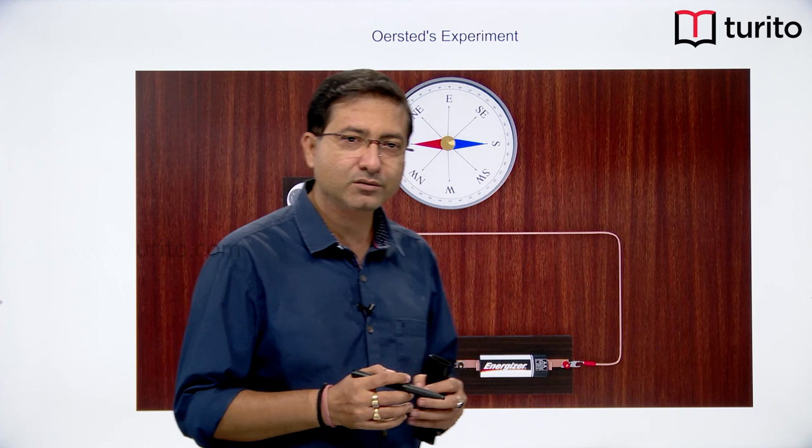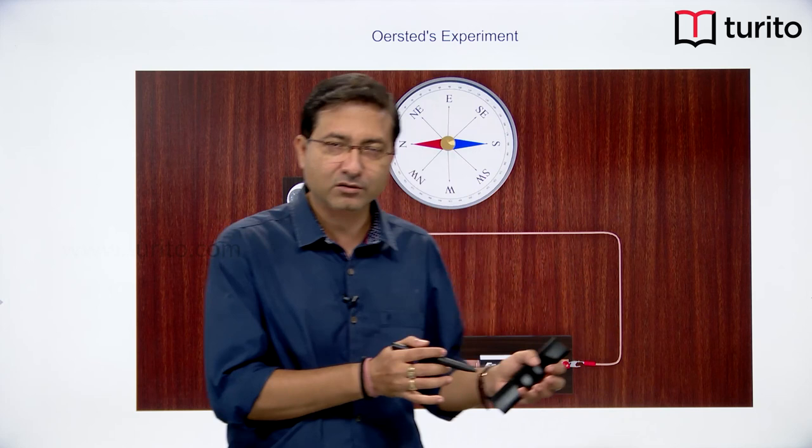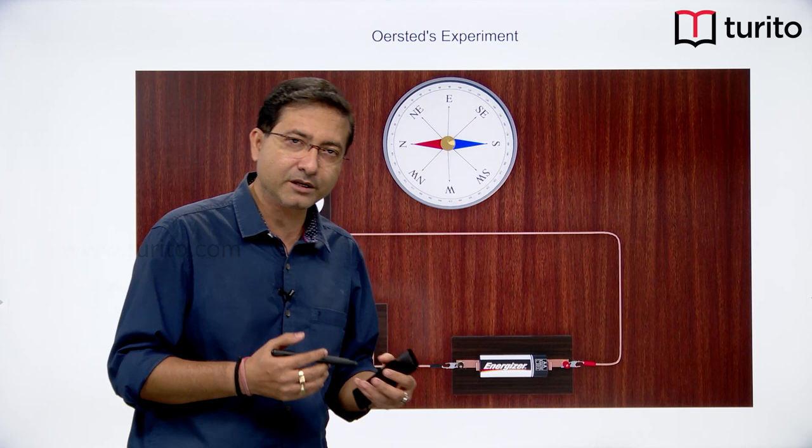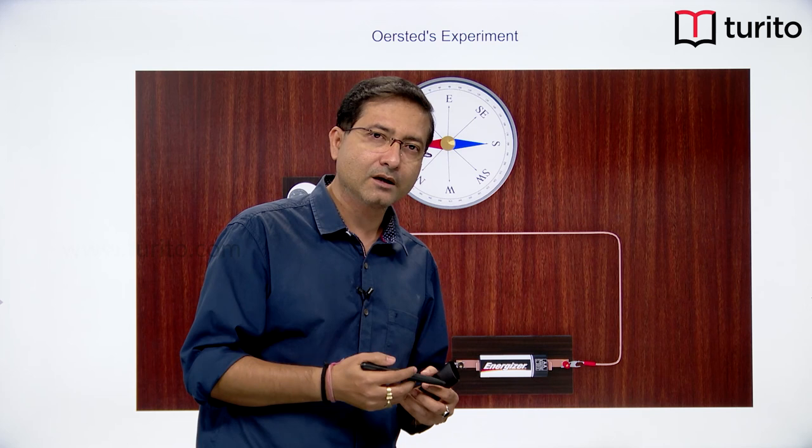Earlier people used to think that electric effect — electrostatics — and magnetism were different things. Later people realized that both are the same thing; in combination we cannot segregate them. When a particle is stationary it produces an electric field; when it is in motion it produces a magnetic field. That means you cannot segregate electric field and magnetic field.